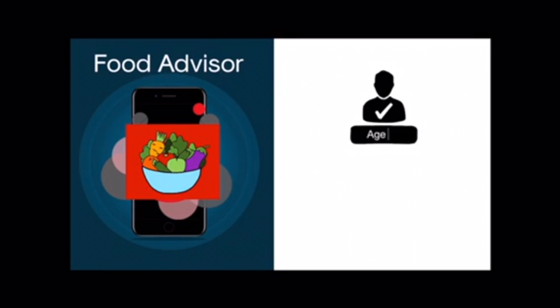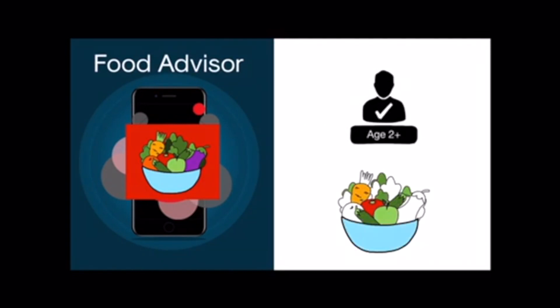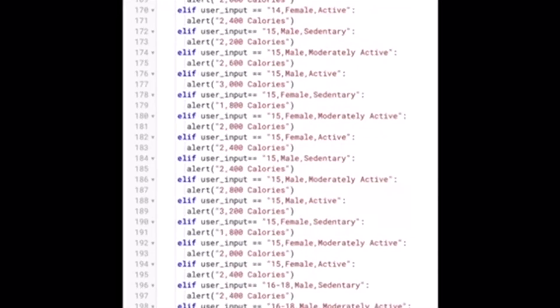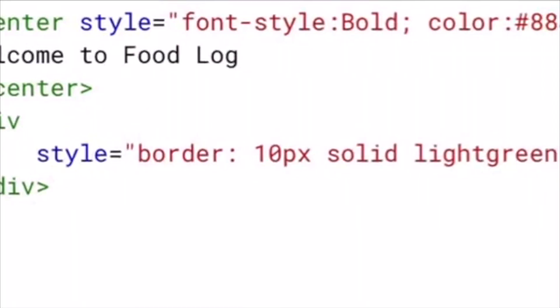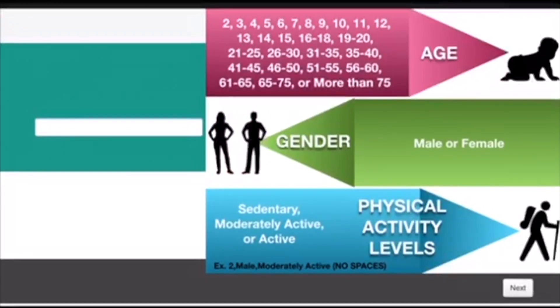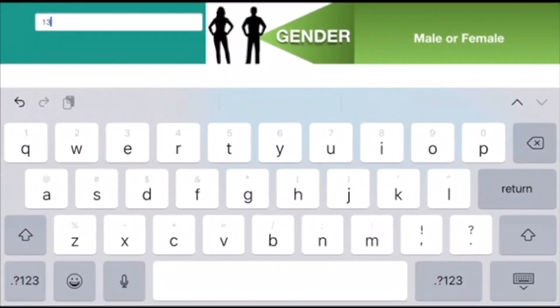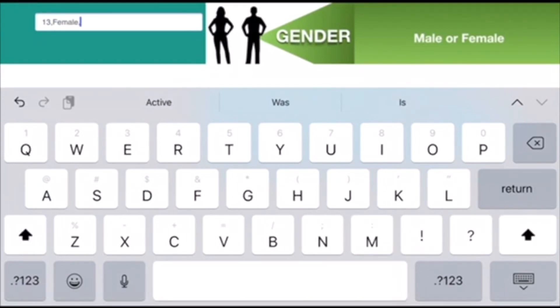This app is for people who are 2 years or older and are looking to have a more stable diet. Food Advisor was created using Python and HTML. Food Advisor starts off by calculating the number of calories you must consume based on your age, gender, and physical activity level.